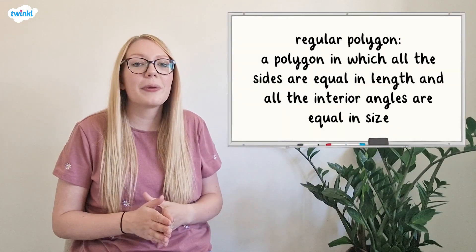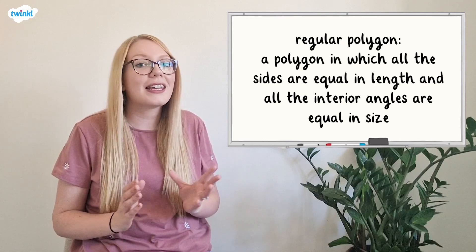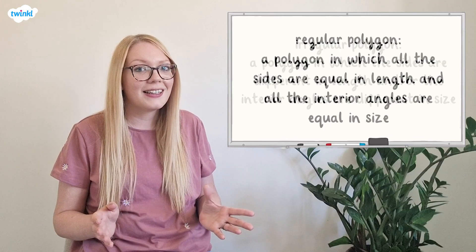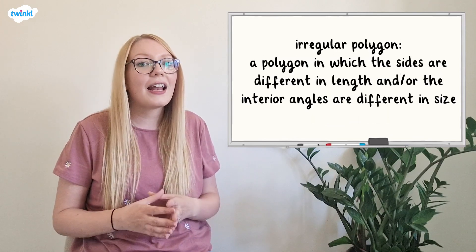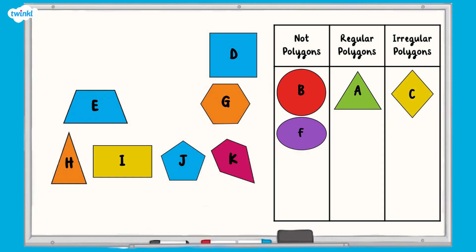Now it's your turn. Can you finish sorting the shapes into the correct columns? Remember, a regular polygon is a polygon in which all of the sides are equal in length and all of the interior angles are equal in size. An irregular polygon can have sides of different length and interior angles of different size. Pause now while you finish sorting the shapes in the correct column.